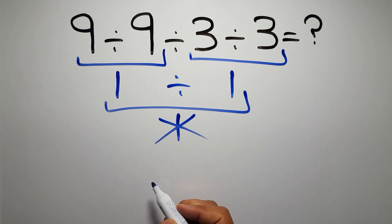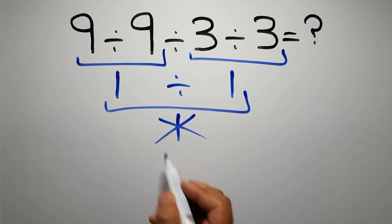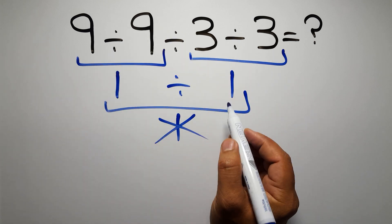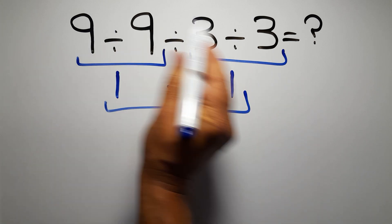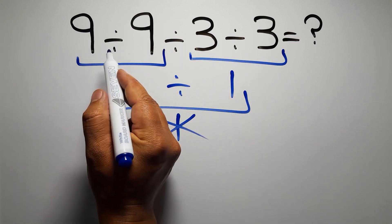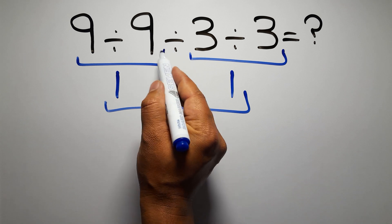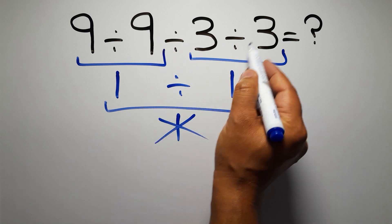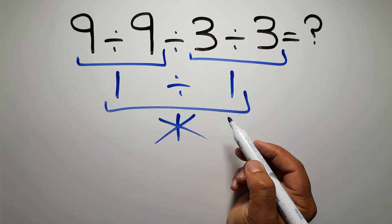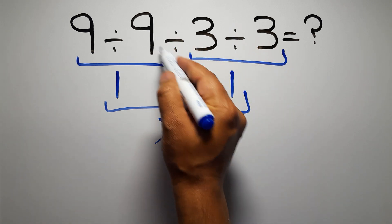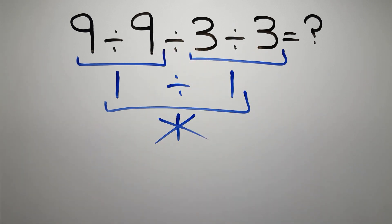According to the order of operations, when we have more than one division in an expression, we have to work from left to right. So here first we have to do this division, then this division, and finally this division. If we do this division before this division, it is wrong.